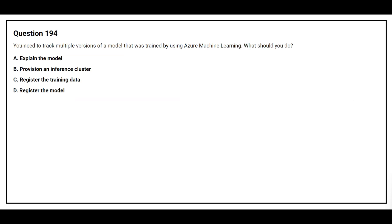Question number 194. You need to track multiple versions of a model that was trained by using Azure Machine Learning. What should you do? Option A: Explain the model. Option B: Provision an inference cluster. Option C: Register the training data. Option D: Register the model. The correct answer is Option D: Register the model.